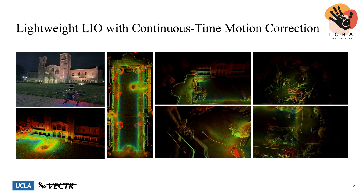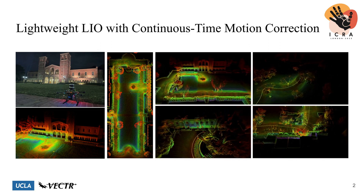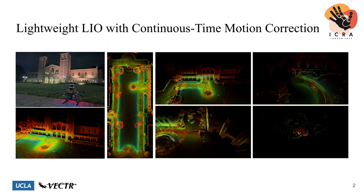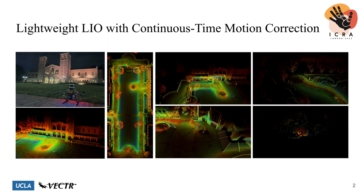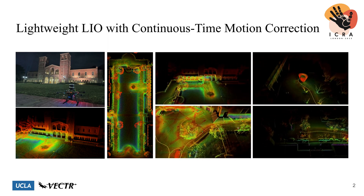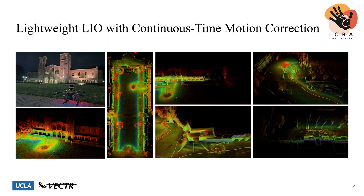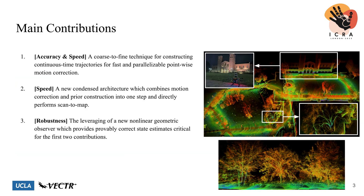To this end, we present Direct LiDAR Inertial Odometry, or DLIO, an efficient LIO algorithm that utilizes a new coarse-to-fine approach in constructing continuous time trajectories to perform precise motion correction. This is achieved through three main contributions, each of which contributes to increasing the overall speed, accuracy, and robustness of our algorithm.